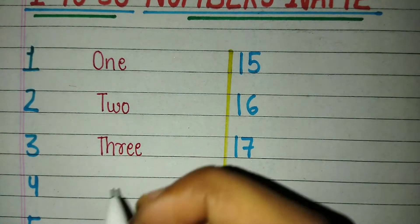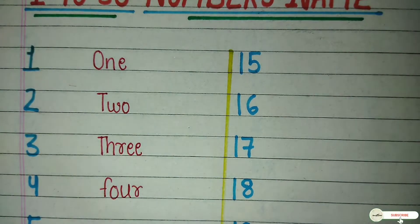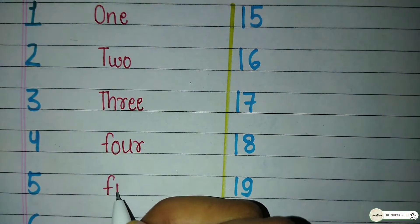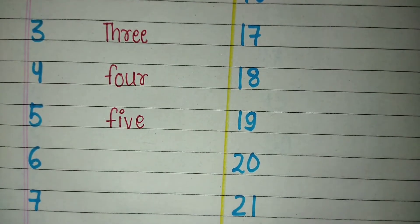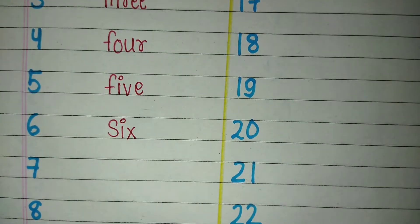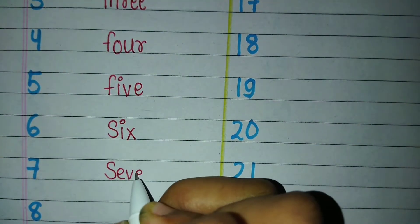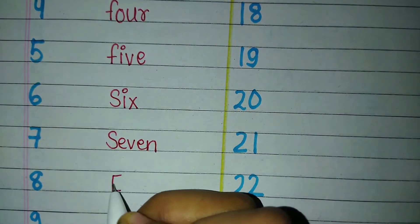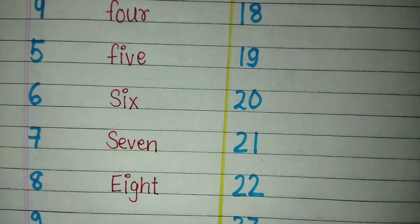Four — F-O-U-R — 4. Five — 5. Six — 6. Seven — 7. Eight — E-I-G-H-T — 8.